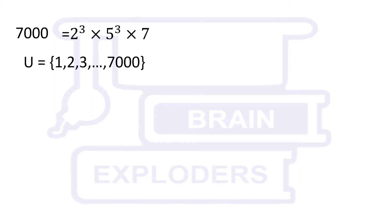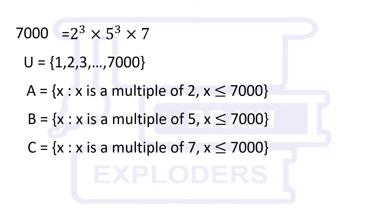Let us suppose that U is a set that contains all the positive integers less than or equal to 7000. Let A, B, and C be the sets containing positive integers less than or equal to 7000 which are multiples of 2, 5, and 7 respectively.